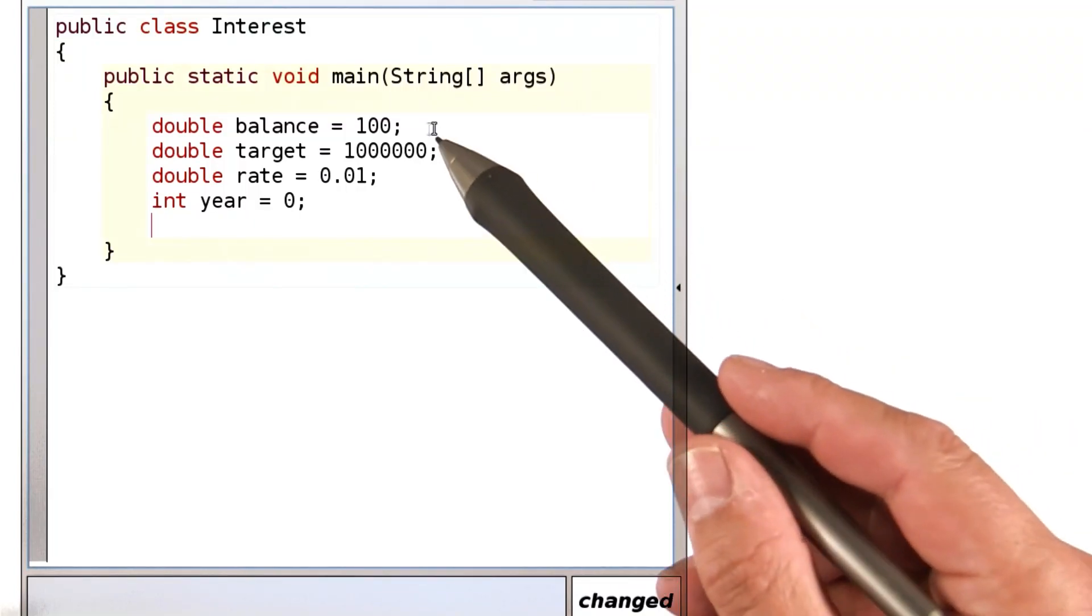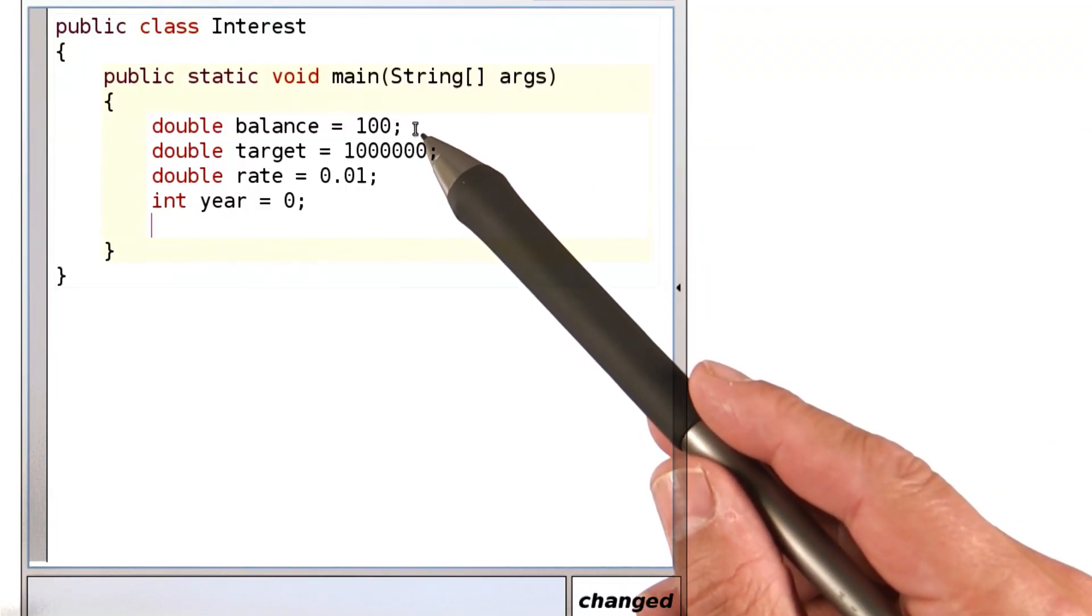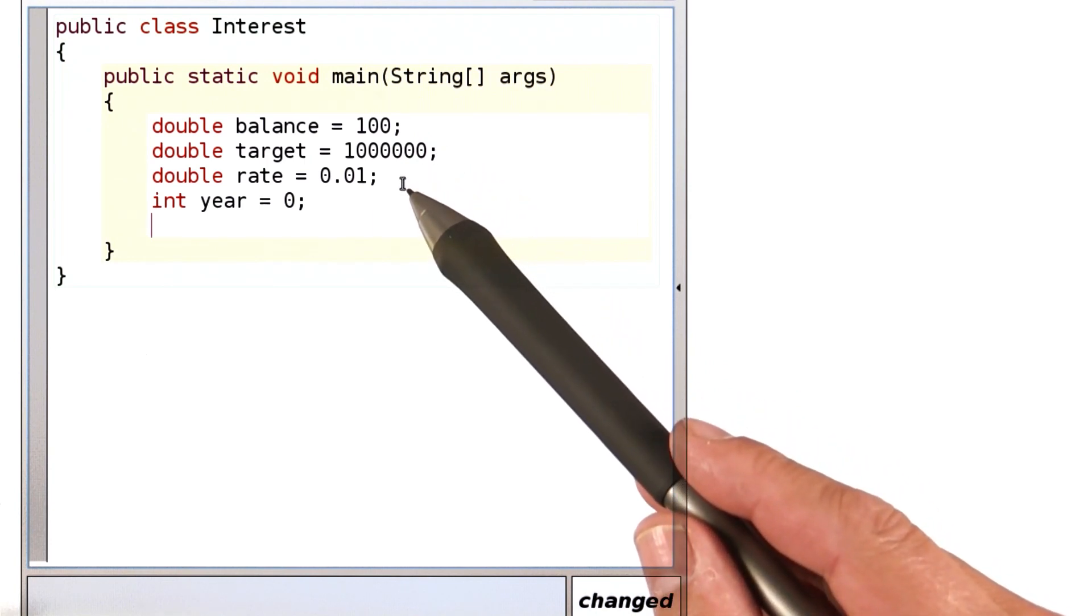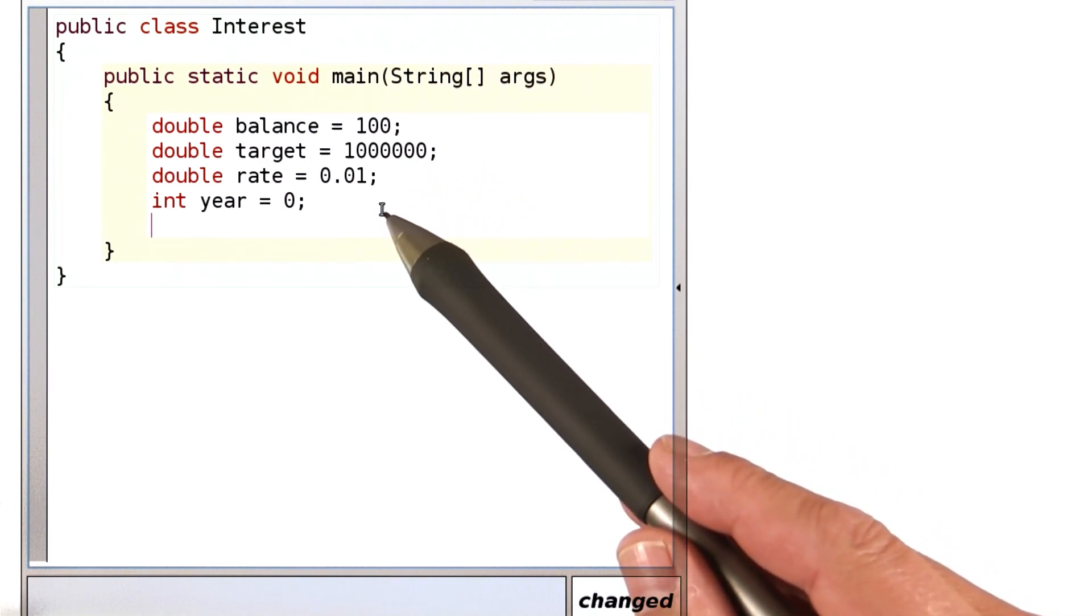Here's the start of our program. I've set up a few variables. Note the initial balance of $100, my target of $1,000,000, the interest rate of 1%, and right now we're in year 0.